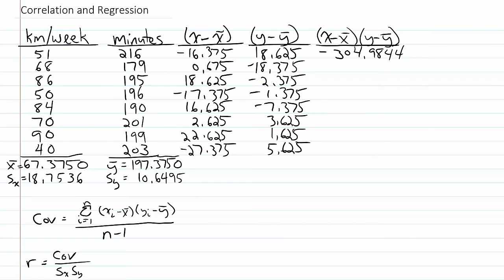For the next row, I have 0.675 times negative 18.375, and that's going to be negative 11.4844. And I'll continue like this for the remaining observations.